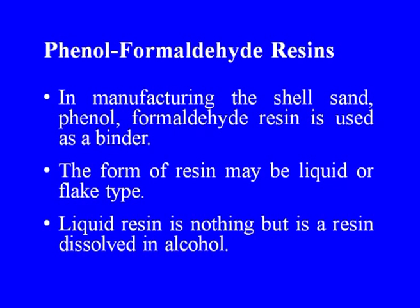In manufacturing the shell sand, phenol formaldehyde resin is used as a binder. The form of resin may be liquid or flake type. Liquid resin is a resin dissolved in alcohol and is used for manufacturing shell sand by either the warm air process or the ignition process. Solid or flake resin is used for the hot coating process. Most Indian manufacturers of shell sand use liquid resin because of the easiness of the process.